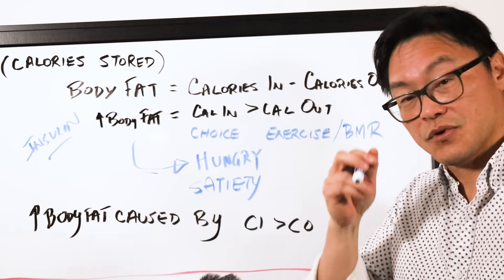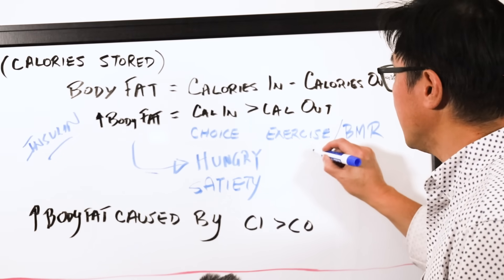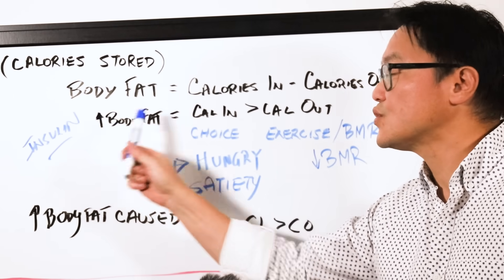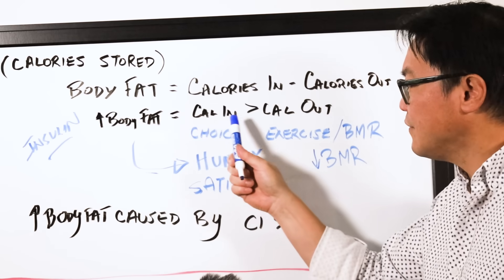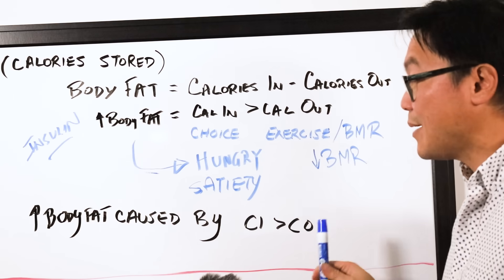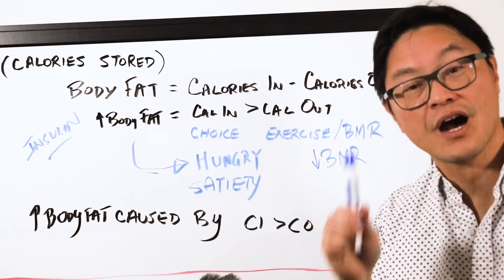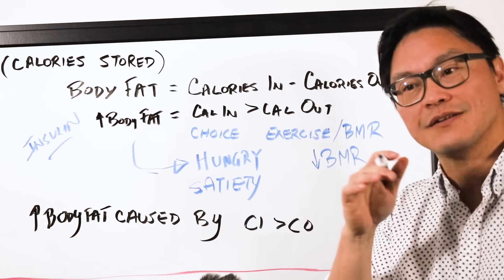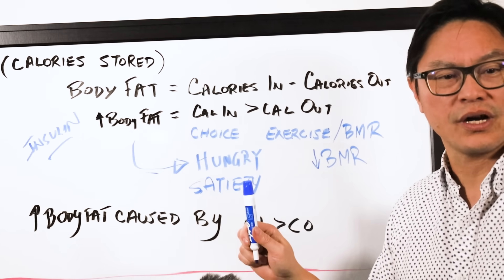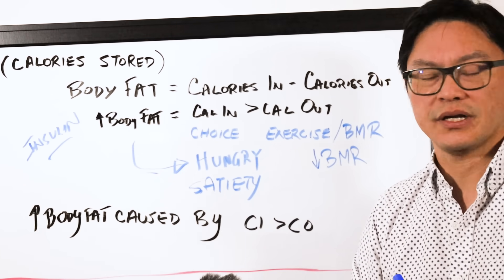What if you simply don't eat the number of calories that you need to gain the body fat? Well, very simple. Your body then decreases your basal metabolic rate. It burns fewer calories so that you still gain that body fat. If you simply focus on eating fewer calories, but not focusing on the hormones, what happens is that you are going to try to eat less, but your body is going to make you more hungry. You're going to fight this until you break. Then you're going to eat and gain the body fat that the insulin is telling your body to do. Either way, you're going to gain the weight because that's what the hormones told your body to do.